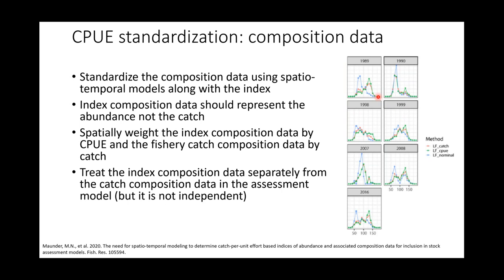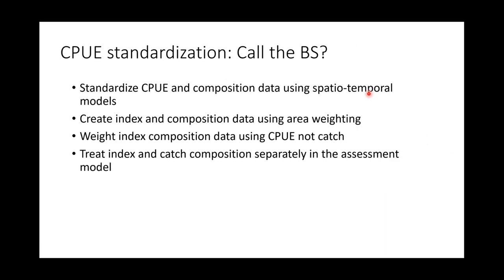Looking at an example from Big Eye Tuna: in blue is the nominal composition data — basically just summing the samples. In green is the CPUE-weighted composition and in red is the catch-weighted composition. You can see that if we use just the nominal composition it's quite different from the other two, which would cause issues in stock assessment modeling. Even between the catch and CPUE compositions there are some differences. In summary for CPUE standardization: use spatial-temporal models, weight index composition by CPUE and catch composition by catch, and put those separately into the model.